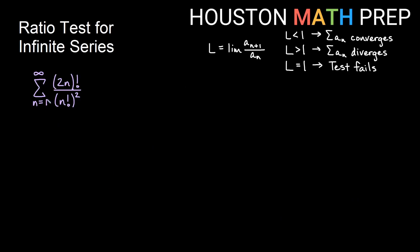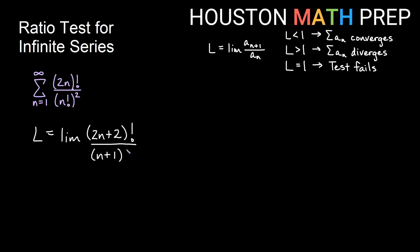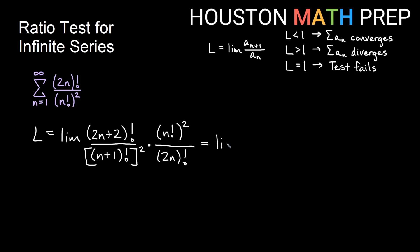For the next example, we have the sum from 1 to infinity of (2n)! over (n!)^2. We look at the limit of the (n+1)th term over the nth term. Plugging in n+1 carefully — the 2 distributes, giving (2n+2)! on top and (n+1)! squared on the bottom — divided by the original, which becomes multiplied by the reciprocal: (n!)^2 on top and (2n)! on the bottom.